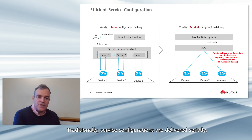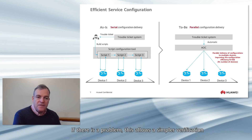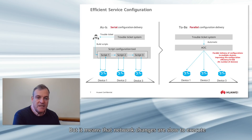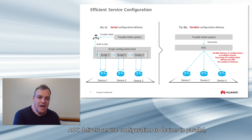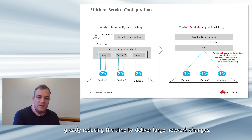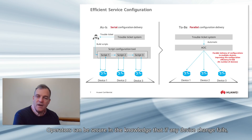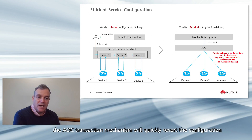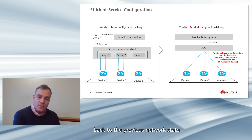Traditionally, service configurations are delivered serially and scripts are executed on devices one by one. While this allows simpler verification and easier coordination, it means that network changes are slow to execute and difficult to revert when there is a problem. AOC delivers service configuration to devices in parallel, greatly reducing the time to deliver large network changes. Operators can be secure in the knowledge that if any device change fails, the AOC transaction mechanism will quickly revert configuration back to the previous network state.